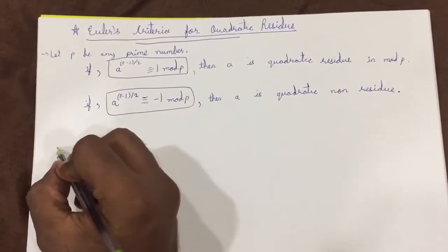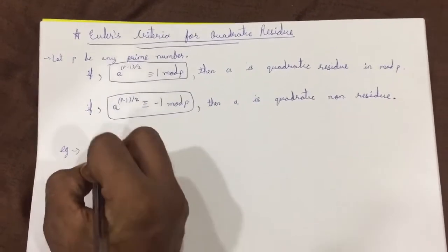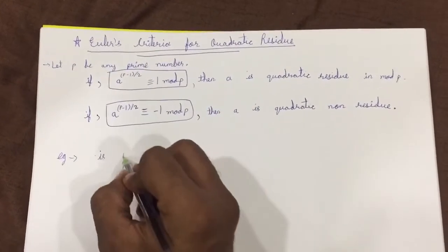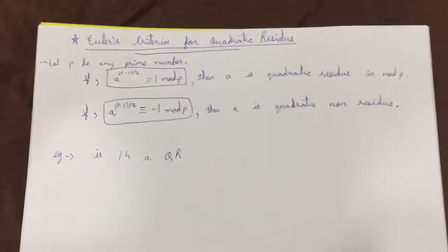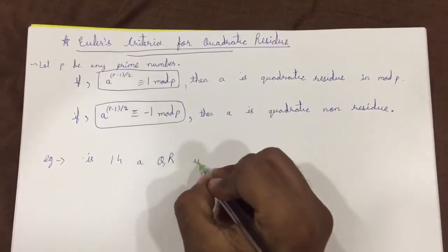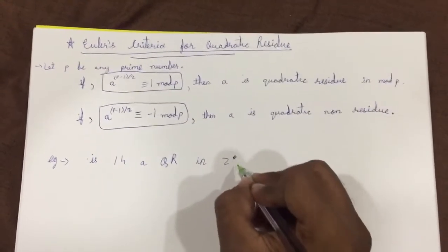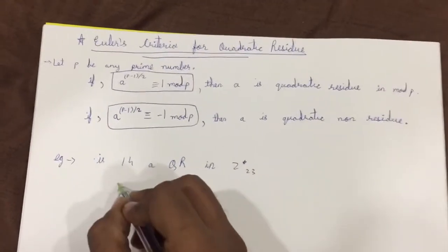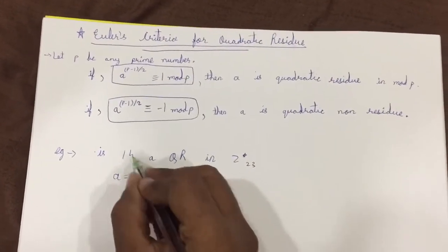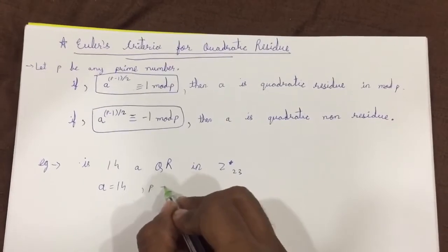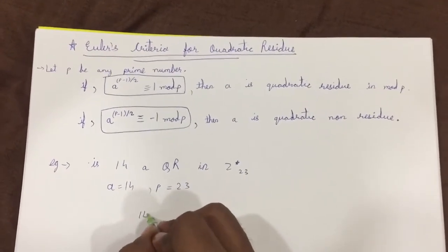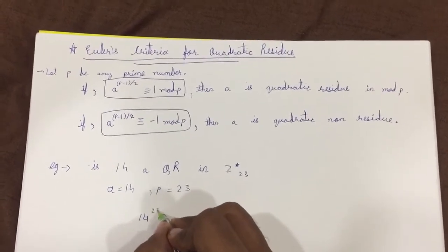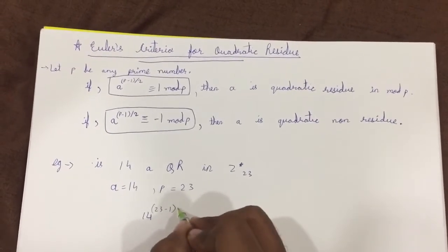Let us understand this with solving two examples. Example number one: is 14 a quadratic residue in Z star 23? So here a will be 14 and p is 23, so 14 raise to 23 minus 1 divided by 2 mod 23.